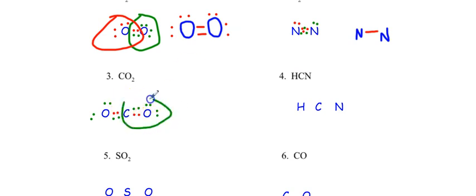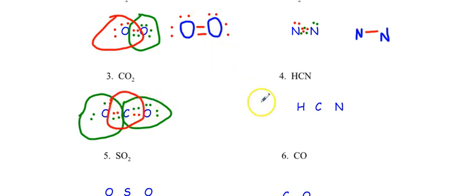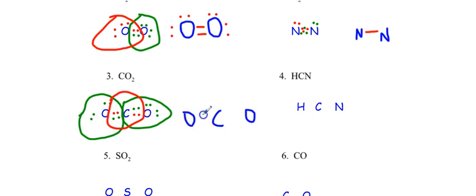After pairing up the remaining singletons from carbon and the right oxygen into the middle, everything works out. Each oxygen claims two, four, six, eight electrons. Carbon now claims two, four, six, eight electrons. Everything is good — CO₂ has two double bonds, one between each oxygen and the carbon, with two lone pairs on each oxygen.